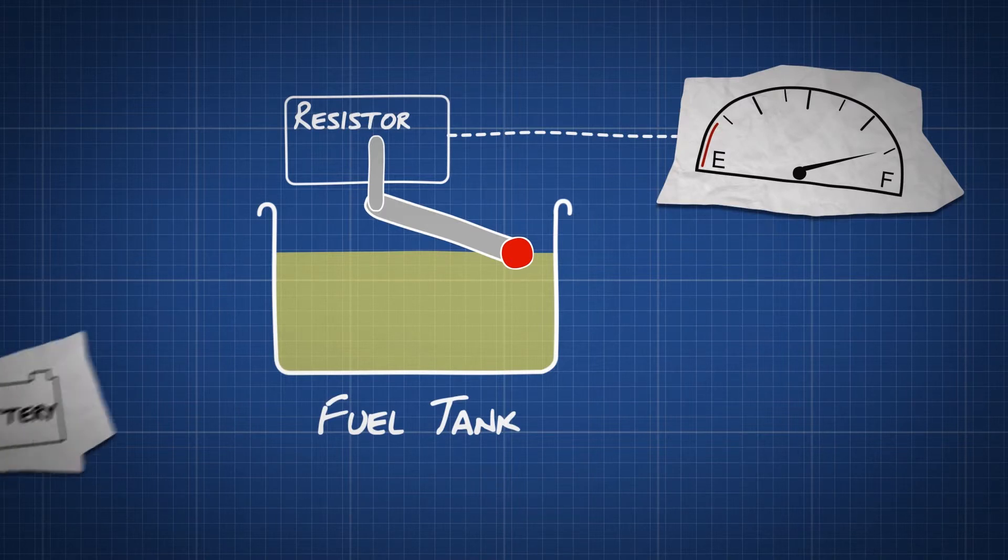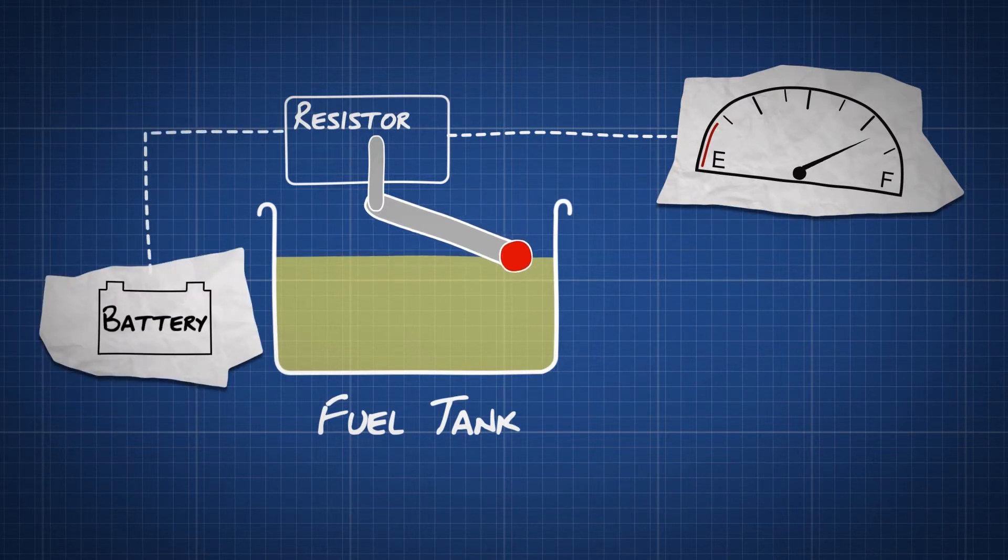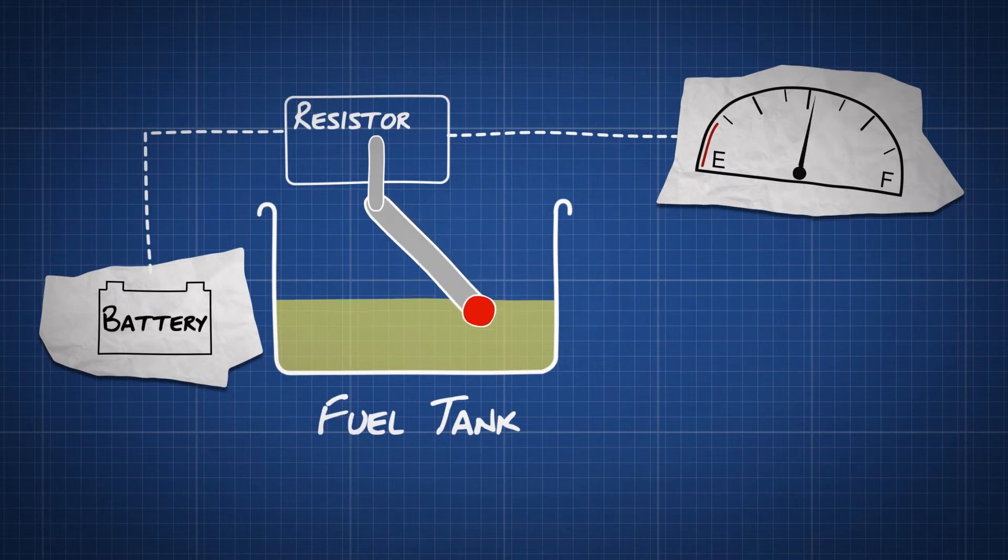The signal comes from your car's battery via a small coil. The lower the float drops, the more current the resistor sends to the fuel gauge, and the closer your gauge gets to empty.